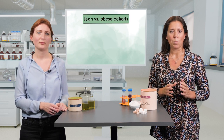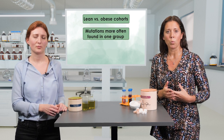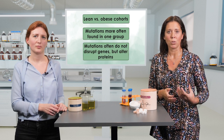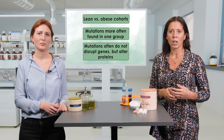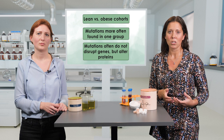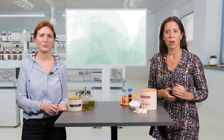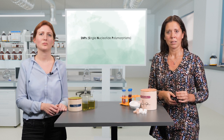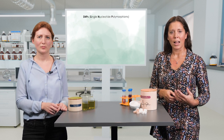For example, lean people are compared with obese ones for mutations that are more often found in one group than the other. Often, mutations in genes are found through these studies that do not disrupt them, but alter the activity of a protein or change an interaction site with another protein. We speak here of single nucleotide polymorphisms, or SNPs. This is when only one nucleotide of the DNA is exchanged.